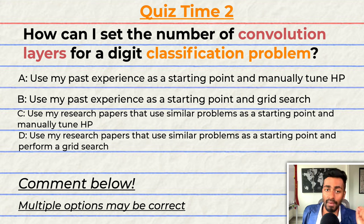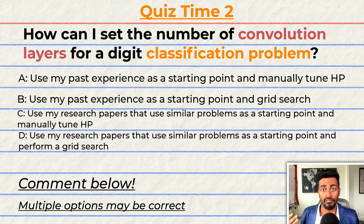A, use my past experience as a starting point and manually tune hyperparameters. B, use my past experience as a starting point and perform some grid search. C, use research papers that solve similar problems as a starting point and manually tune hyperparameters. Or D, use research papers that solve similar problems as a starting point and perform a grid search. Note here that multiple options may be correct so comment your answer down below and let's have a discussion.